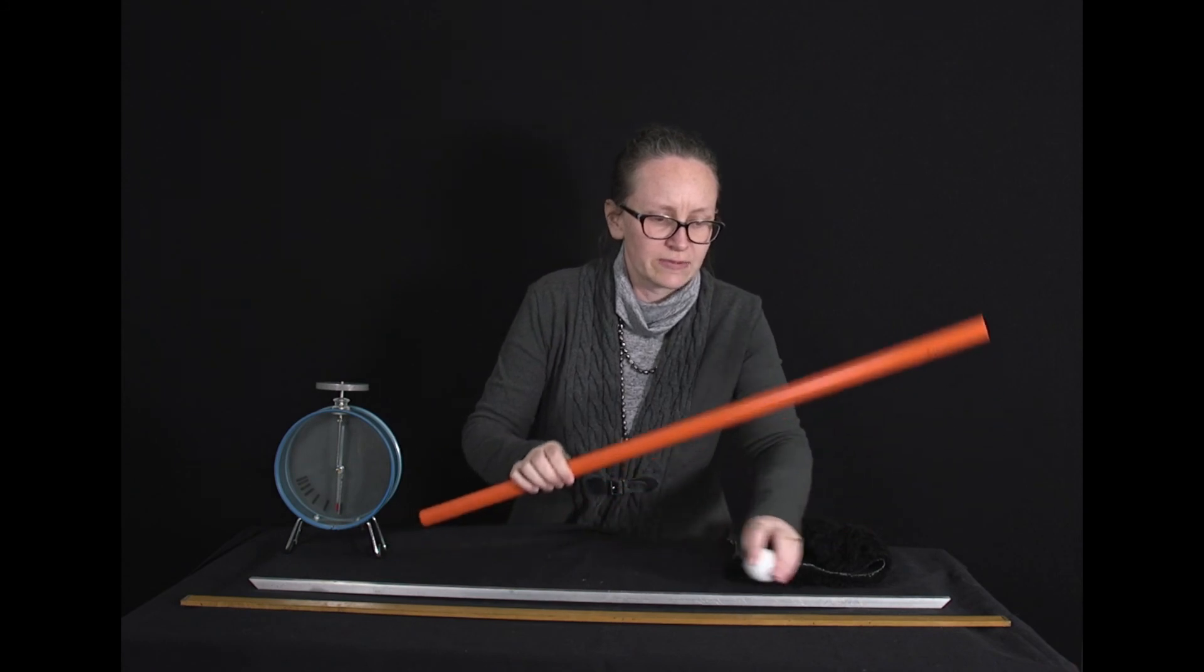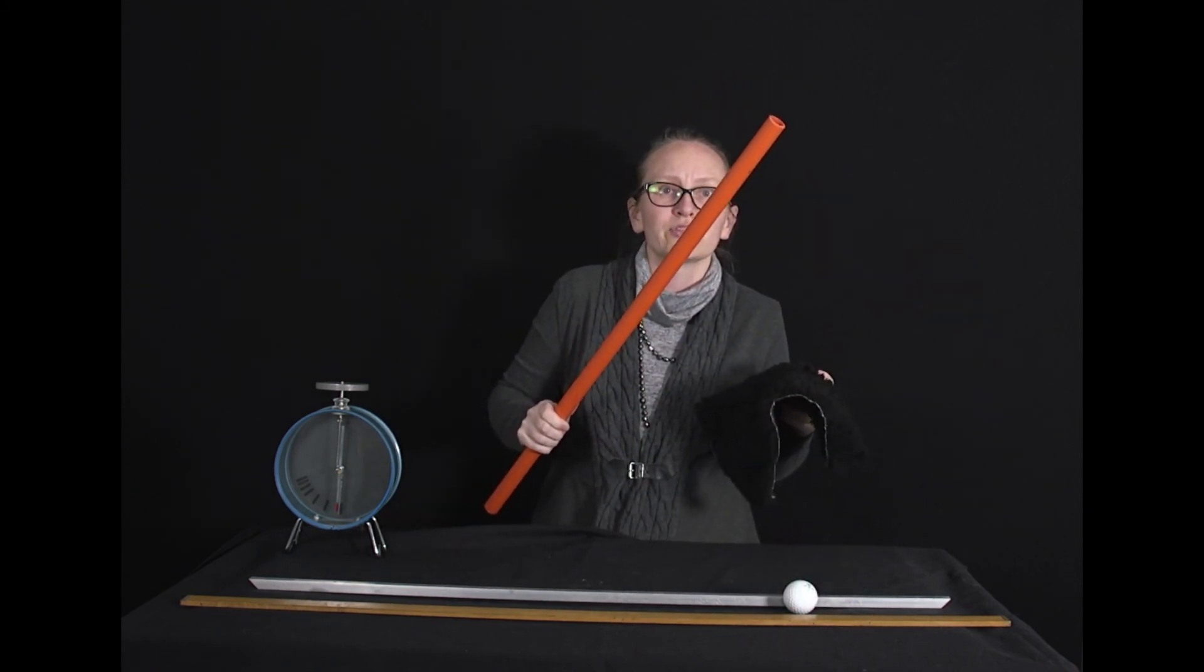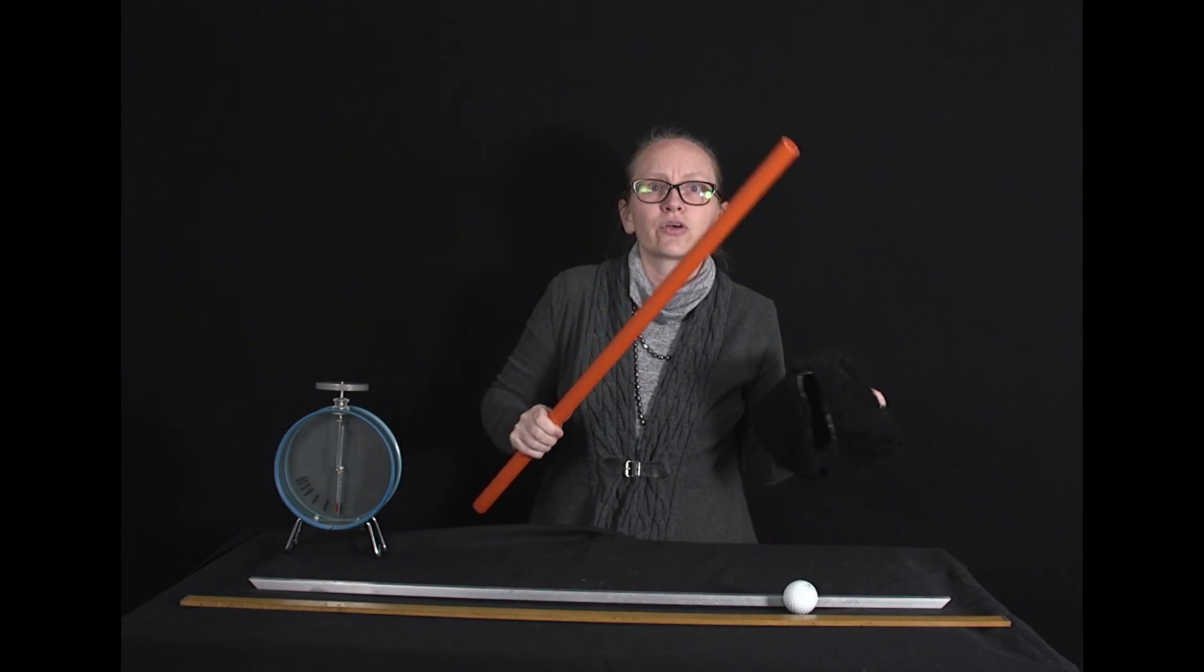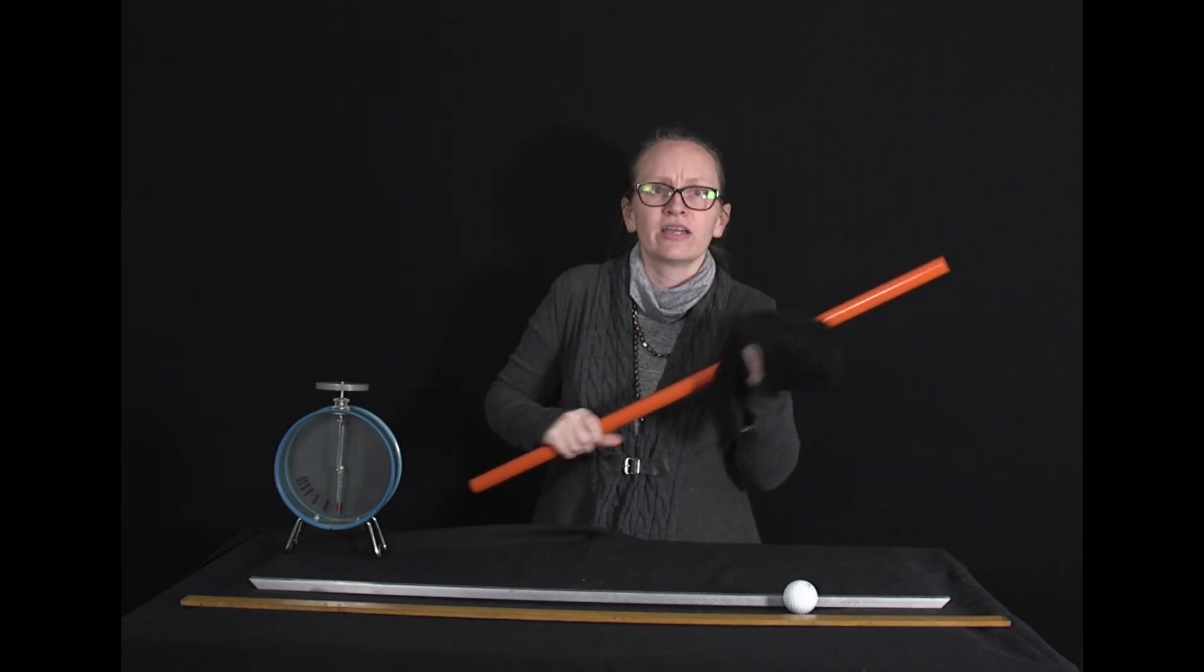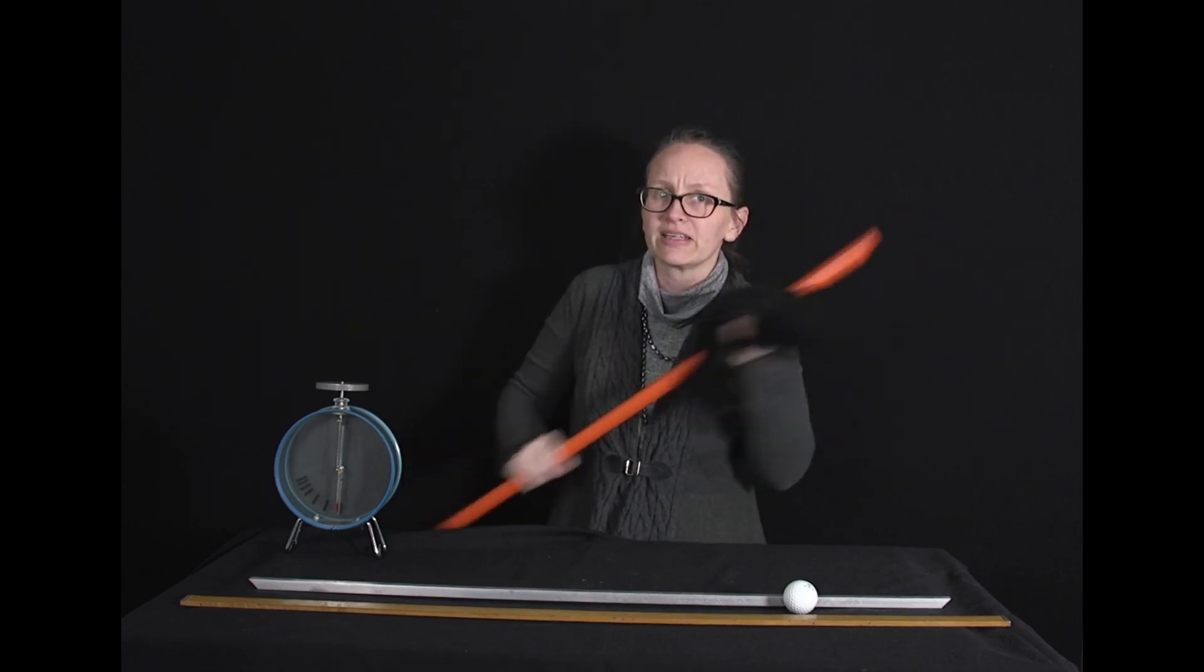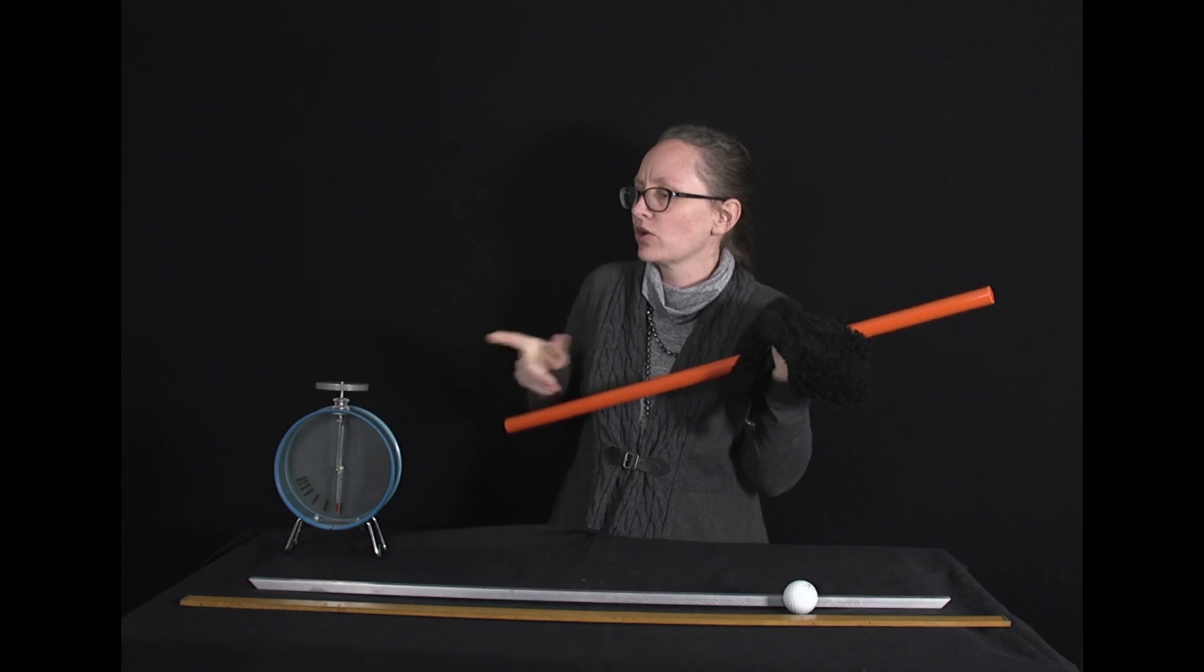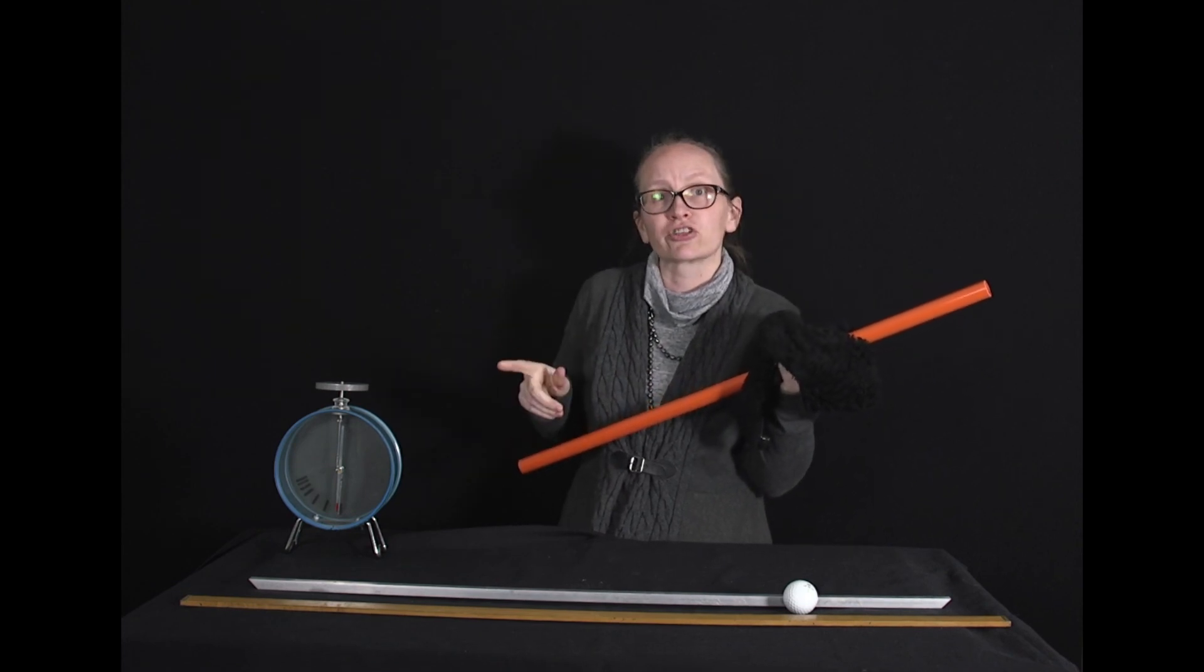Now what I can do is we've seen how we can charge up a PVC pipe to make it negative. So what I want you to do now is make a prediction about what you think is going to happen if I bring this charged PVC pipe close to the top of the electroscope there.